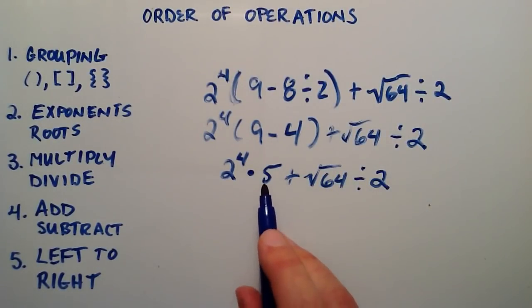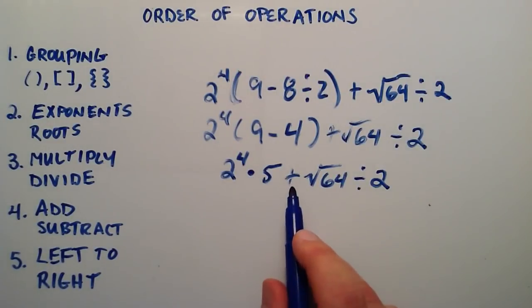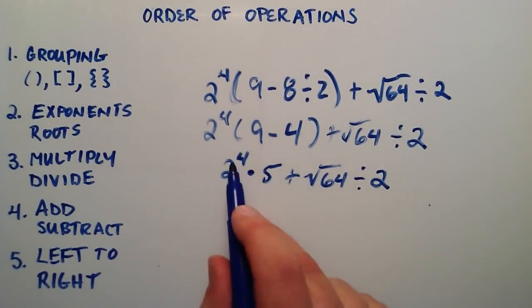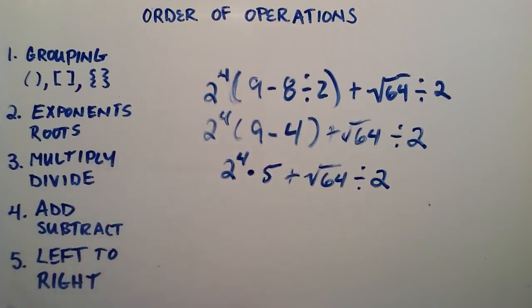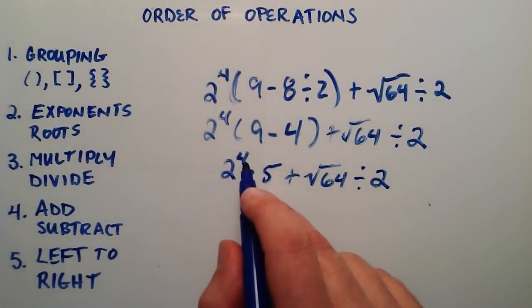So now we have multiplication, we have addition, we have division, we have a root, and we have an exponent. So of all those things, exponents and roots come first. So going left to right now, we evaluate 2 to the 4th power.